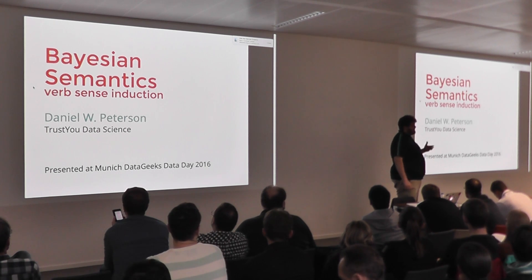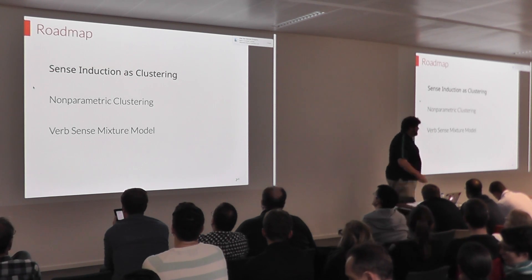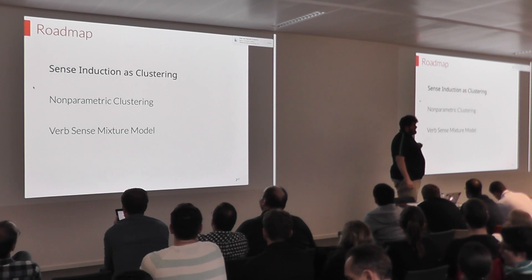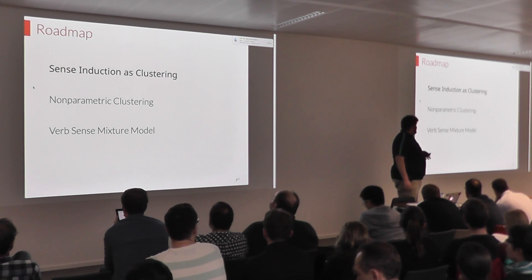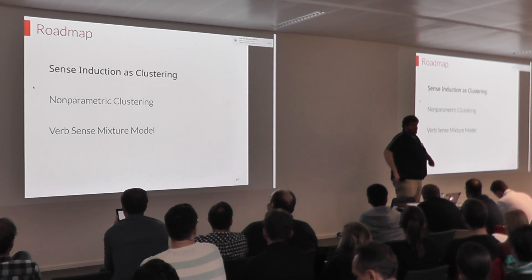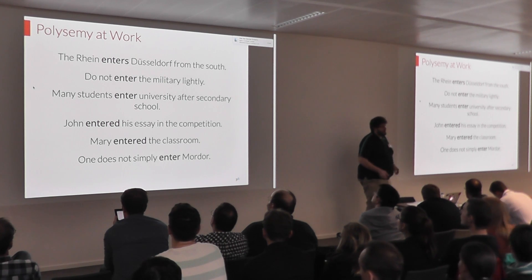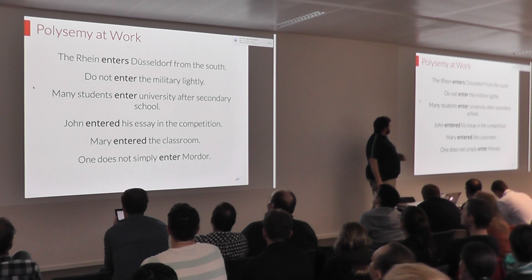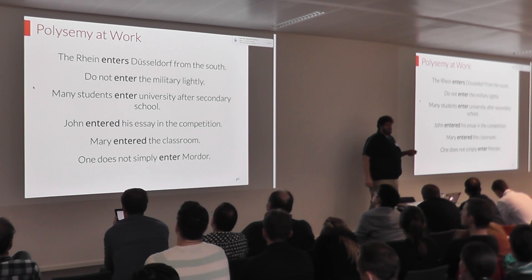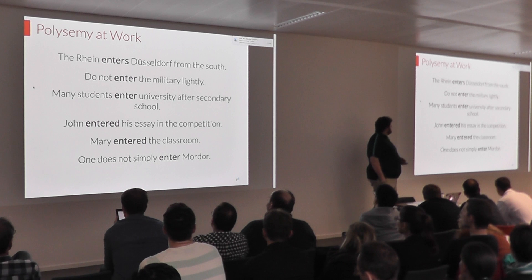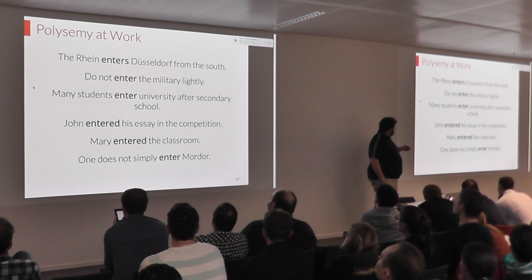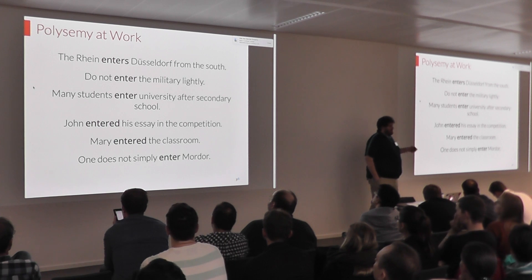I'm going to first describe to you sense induction as clustering, and then talk about Bayesian nonparametric clustering and introduce a verb sense mixture model to do sense induction. So, what do we mean by verb senses? I've got an example here of a polysemous verb, 'enter', and a few different sentences that feature this verb. The rhyme enters Dusselbrook from the south is qualitatively a different kind of enter than when John enters an essay in a competition, or when you enter a classroom.